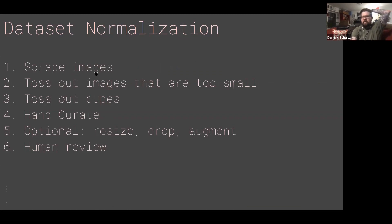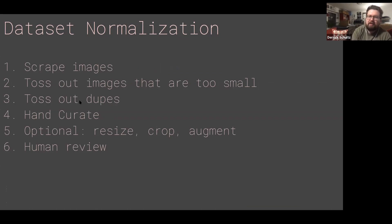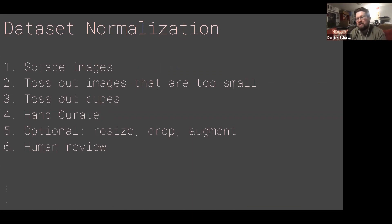So first thing is you've got to scrape the images. Then you will always end up with images that are too small for what you want to do — you're going to have to toss those out. You will quite often end up with duplicate images. You're going to toss out the duplicates. And then the last thing is you have to do the hard work of hand curating and pulling out images that just aren't right for your dataset. And finally, you'll have to actually augment, crop, or resize these things. So let's make a Bone Bone dataset.